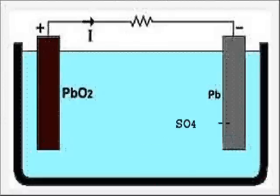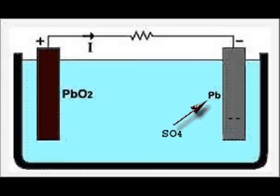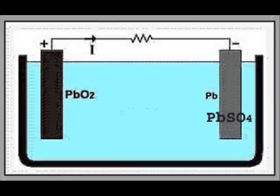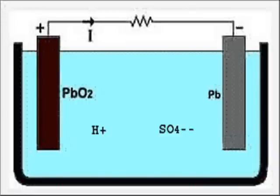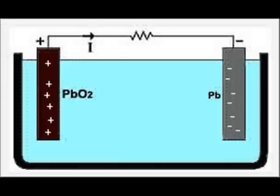As the radical sulphate cannot exist alone, it will attack pure lead and form lead sulphate. As positive hydrogen ions take electrons from the lead peroxide plate and negative sulphate ions give electrons to the lead plate, there would be an inequality of electrons between these two plates.